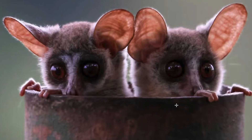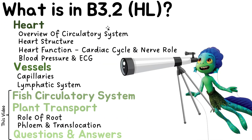In this video we're going to be talking about transport — this is B3.2 HL. In a separate video I covered the hearts and vessels, all the animal transport stuff. This video we're going to cover mainly plant transport, a little segment on fish circulatory system, and then some questions and answers covering the whole of B3.2 HL. Let's first quickly finish the segment on the fish circulatory system.